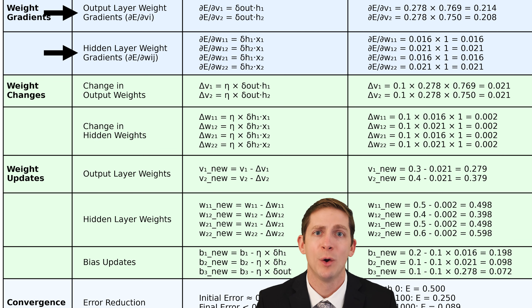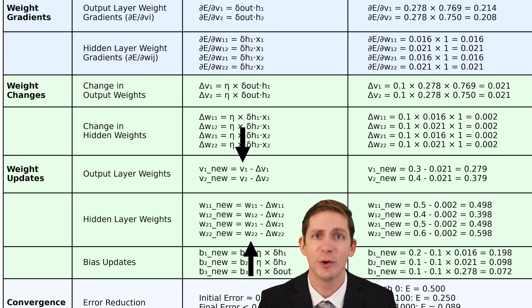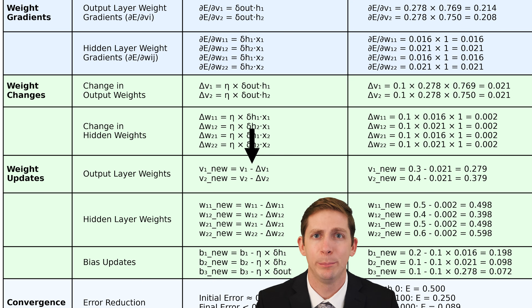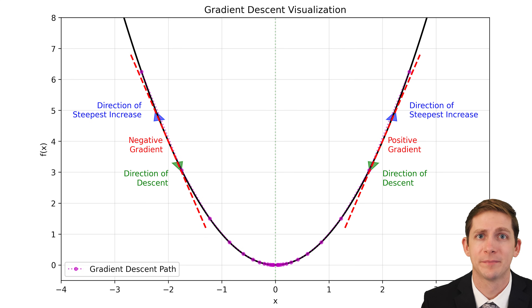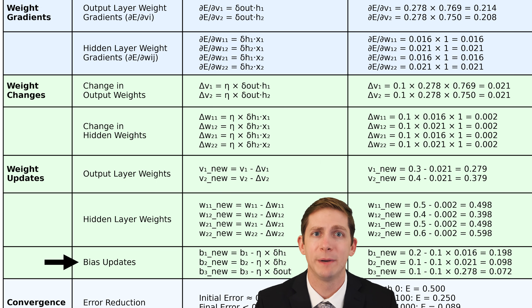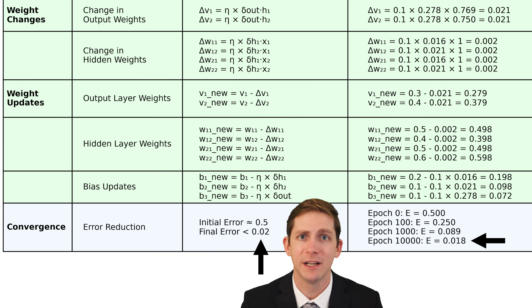With the weight gradients calculated, we can now update the weights using two steps. First, the change in weights are found by multiplying the learning rate times the weight gradient times the output value of the corresponding neuron. Second, take the current weight value and subtract the change in weight to get the updated weight for that training input. Note that the minus sign in the weight updates is important because we're moving in the negative direction of the gradient to minimize error, since the gradient is the direction of the steepest increase in the error function. The updated biases are also found by taking the current bias and subtracting the change in that bias. Our network began with an initial error of 0.5 and after 10,000 epochs, the error reduced to 0.018, indicating convergence to a solution.